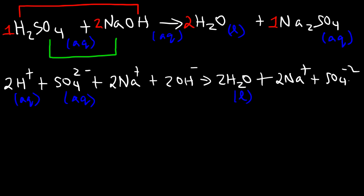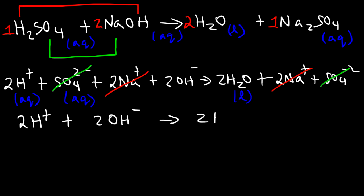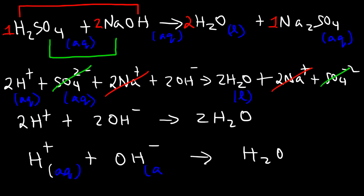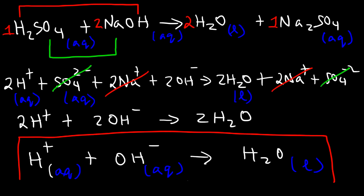Our next step is to identify the spectator ions — those that are exactly the same on both sides. Sodium is a spectator ion and sulfate is a spectator ion. What we have left is two H⁺, two hydroxide ions, and two water molecules. We can reduce this by dividing everything by two. So the final net ionic equation is: H⁺(aq) + OH⁻(aq) → H₂O(l). This is the net ionic equation for this acid-base neutralization reaction.